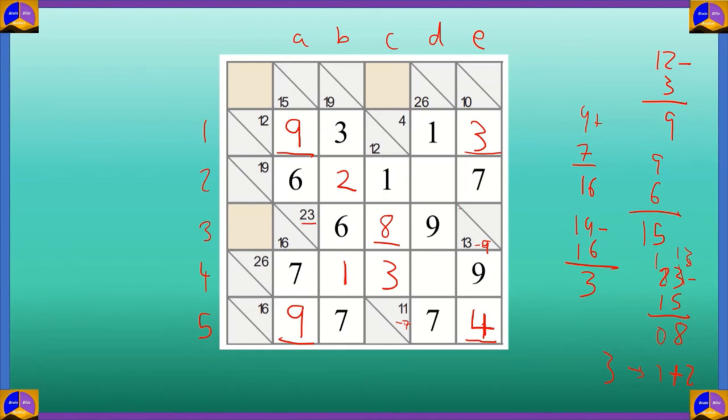Now you can look at row 2. Row 2 is having the sum of 19 across this horizontal block. 7 plus 1 gives you 8. 8 plus 6 gives you 14. 14 plus 2 gives you 16. 19 minus 16 is 3. You can put the value of 3 here. That completes row 2.